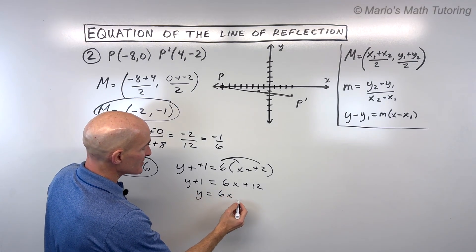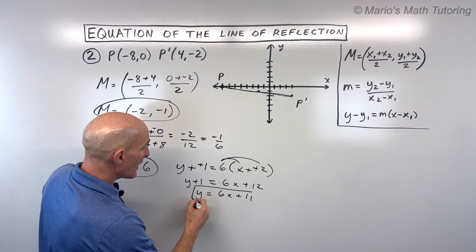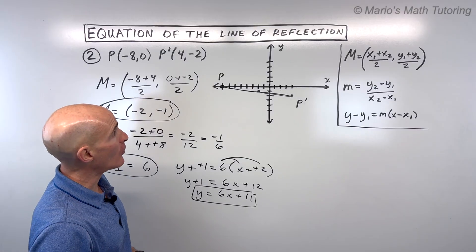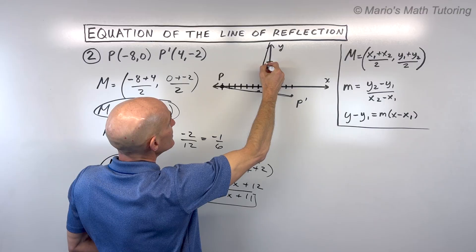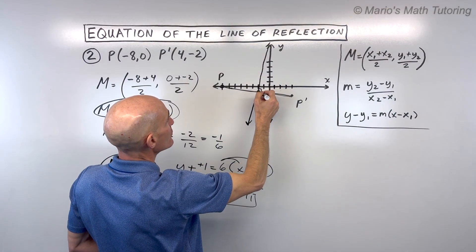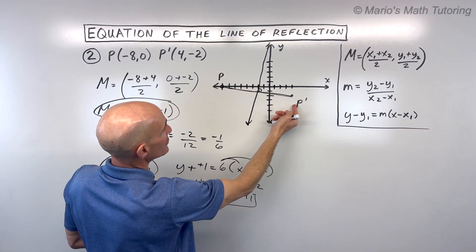So we get Y equals 6X plus 11. And that's the equation of our line of reflection. Now you can see here that 11 is like way up here. So basically this line is going like this. That's our line of reflection. It's perpendicular. And if you fold P over this line, you're going to end up with P prime.